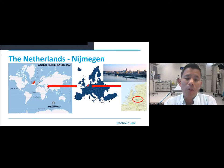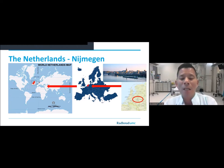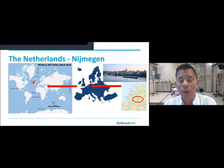Now I'll take you to the Netherlands. I'm speaking from Nijmegen, in the east, where we organize the DSCC course. The Netherlands is very densely populated with 17 million inhabitants, situated near the German border and only about 2,000 kilometers from Ukraine — you could drive there in two days, or one day if you drive very fast.